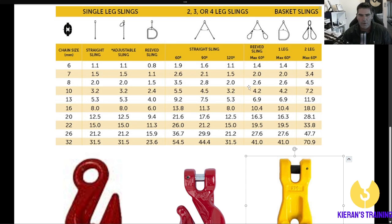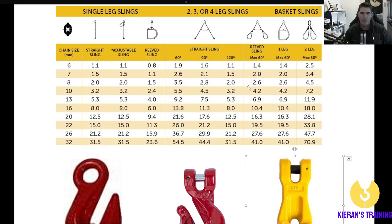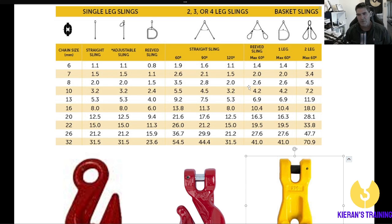So that's a quick rundown on the different charts and how you're going to read them. Always refer to the tags on the chains or the slings. As a rough guide, pull up these charts — but remember, some manufacturers may be slightly different, so always go back to the actual tags on the slings themselves. And remember, if they don't have a tag on them, you need to tag them out because you can't use them. Hope that explains it a bit better. If you have any questions, leave a note in the comments and don't forget to hit that like and subscribe button. Thanks for your time and I'll talk to you soon.